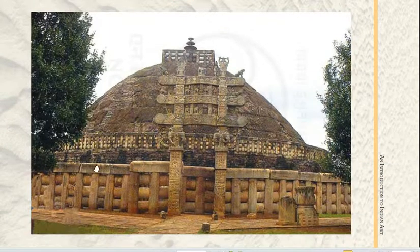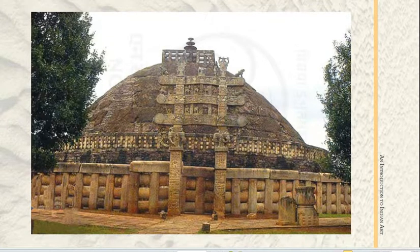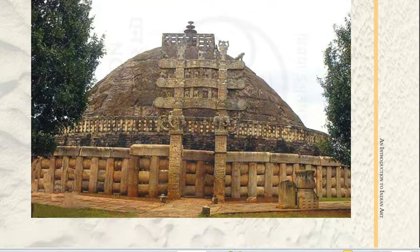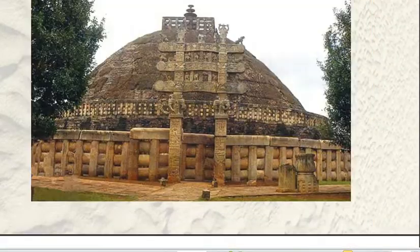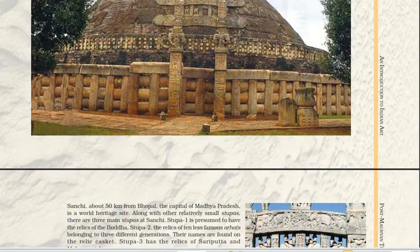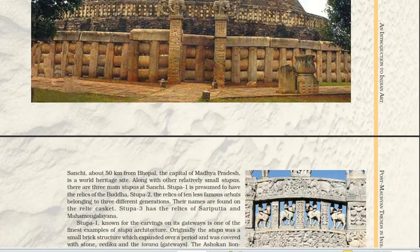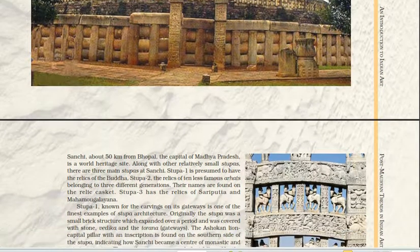Here you can see the dome, the gateway, and the structure called the Chhatri. This is basically the Sanchi Stupa. Sanchi is about 50 km from Bhopal, and the capital of Madhya Pradesh. It is a world heritage site — remember, it is a world heritage site.